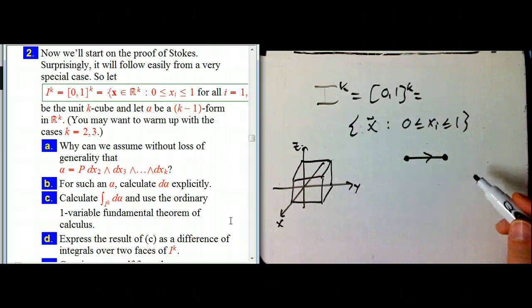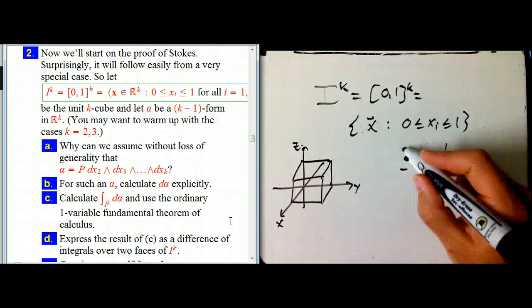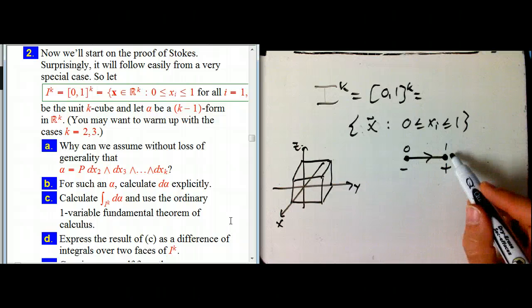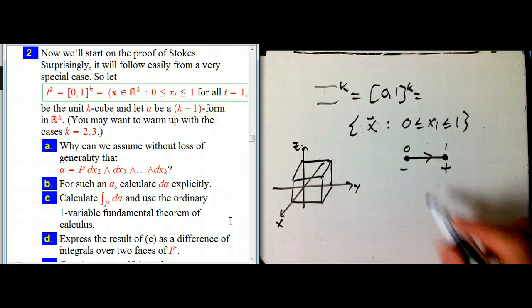If it's the one cube, that's the interval, then it's plus and minus here at one and zero. So it's sort of the ordinary orientation at the far end, and the opposite orientation, a minus sign, at the zero end.